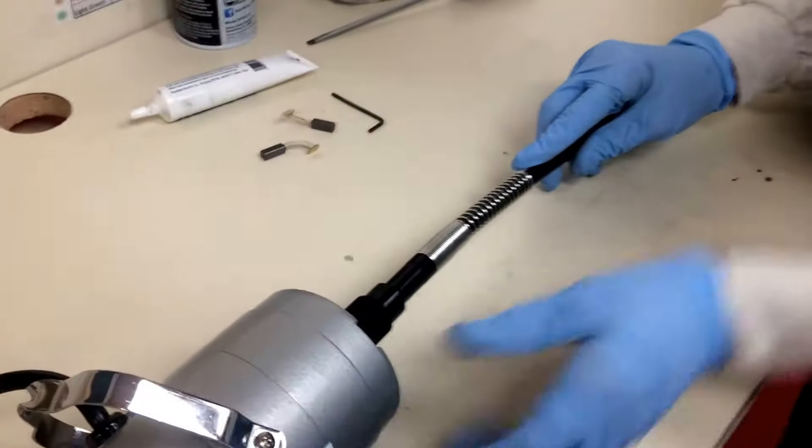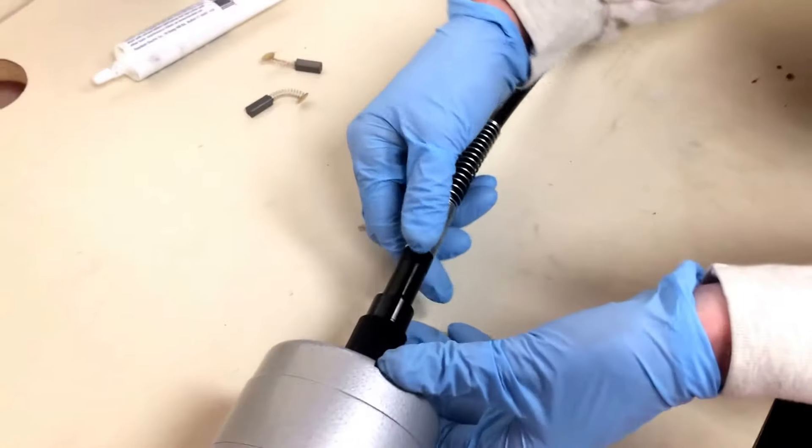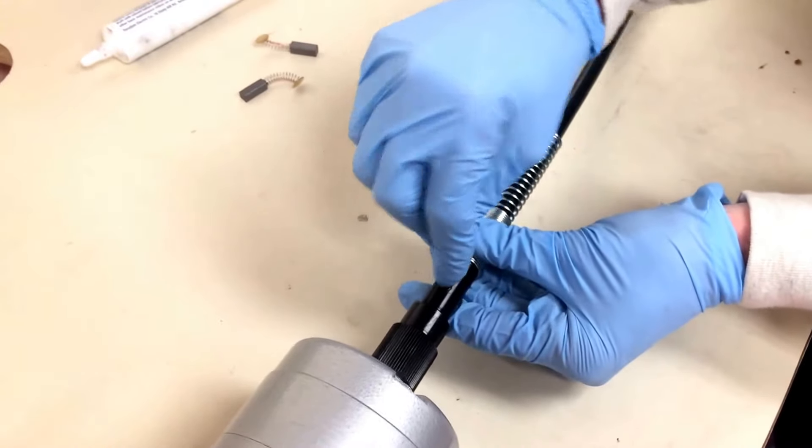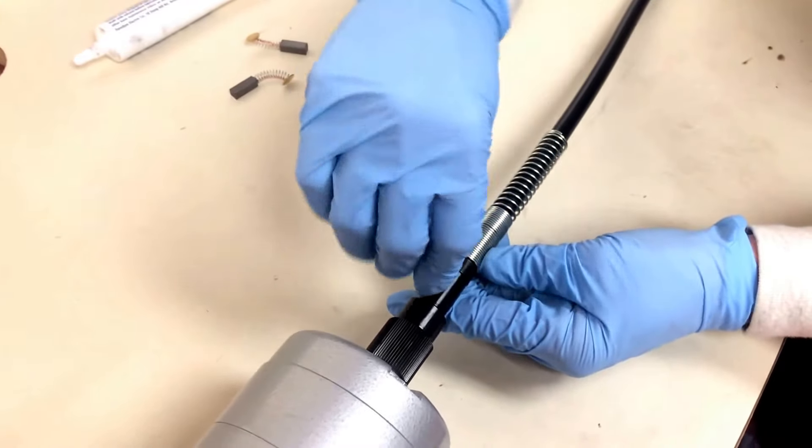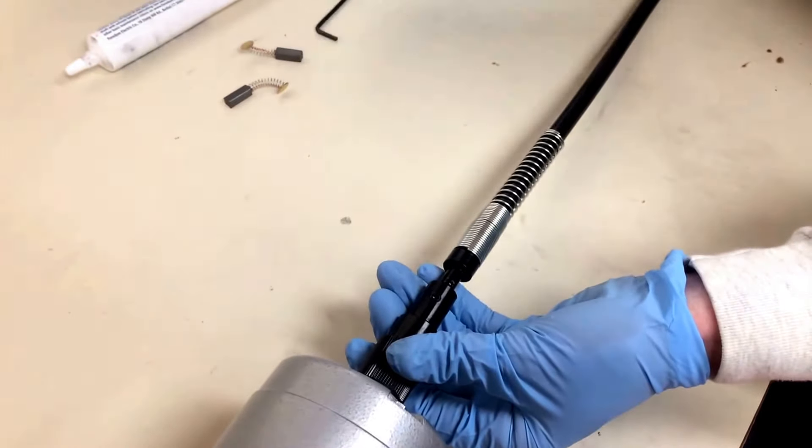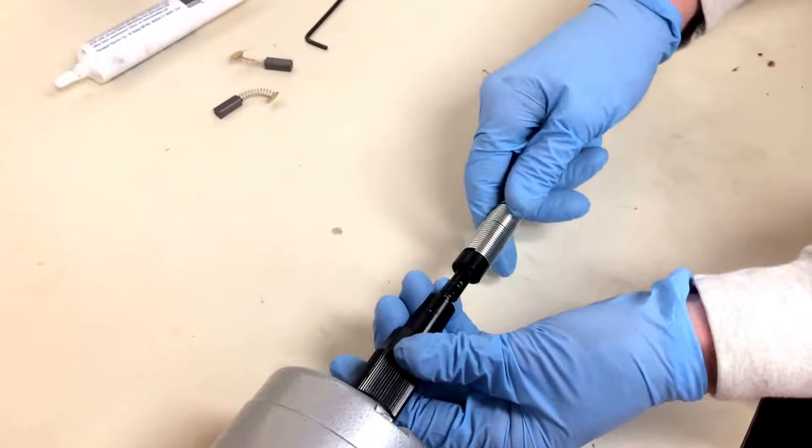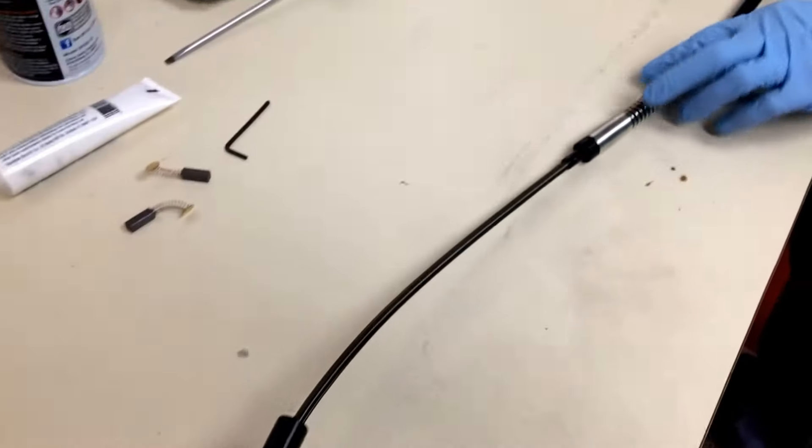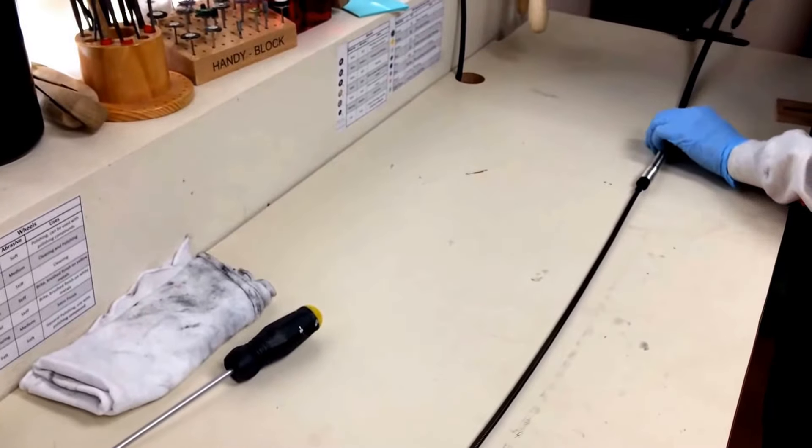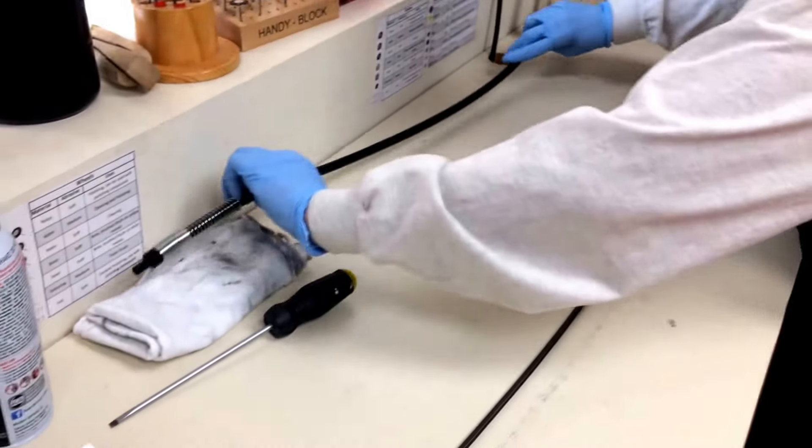So let's move on down here to the sheath and right here is where you're going to use your allen wrench that comes with your flex shaft. You don't need to unscrew this all the way, just enough to release this part. And you're going to remove the sheath and expose the shaft. So go ahead and pull this all the way off and place that to the side.